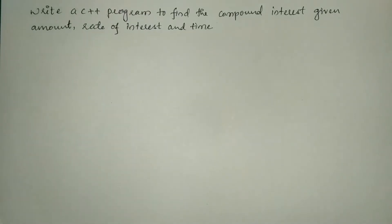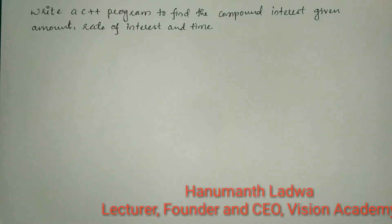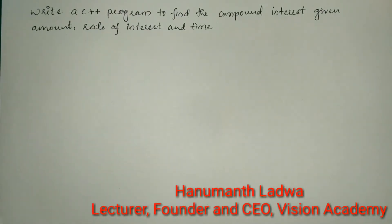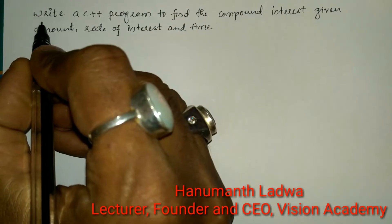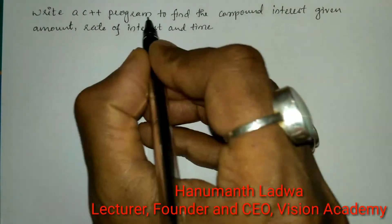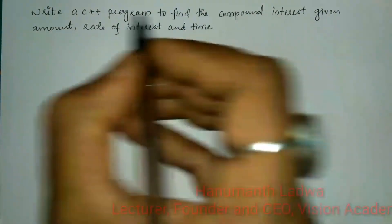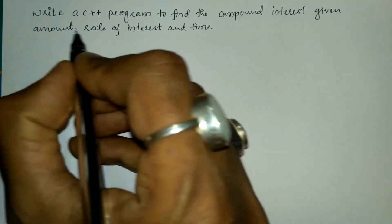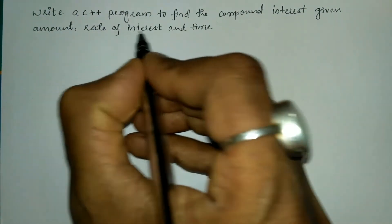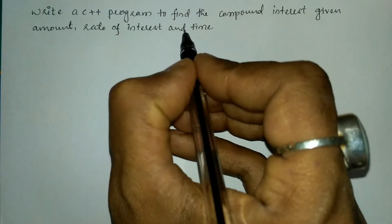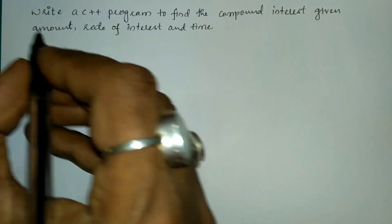Hello and welcome to Vision Academy. My name is Hanumanth Ladwa and in this video we are going to write a C++ program to find the compound interest, given the principal amount, rate of interest, and time.